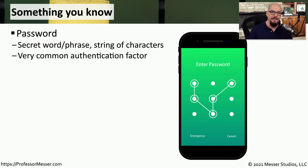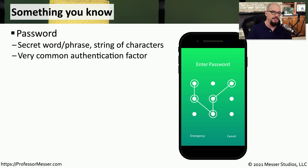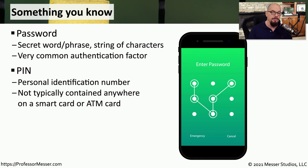The authentication factor of something you know is something that's in your brain, and only you happen to know what this particular value is. One of the most common things that we know is a password, and we commonly use a username and a password to gain access to a system. But we could also use a personal identification number, similar to the numbers you would use at an automatic teller machine.